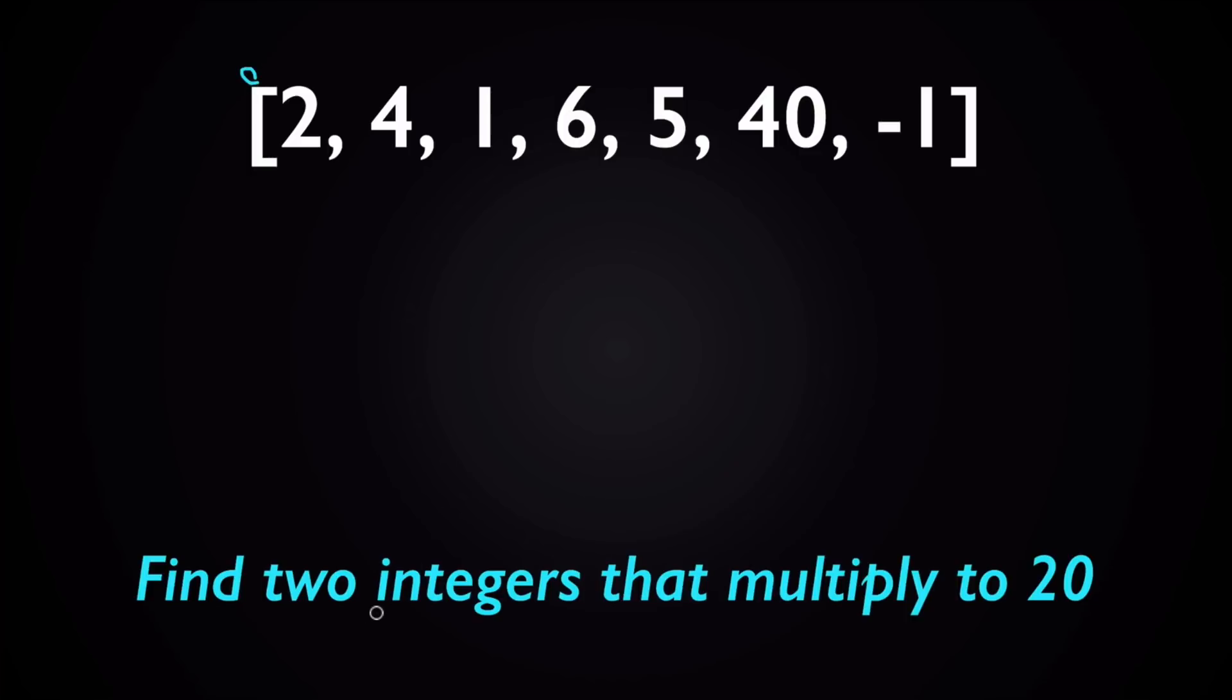So with this example, with this given array, you can see that four and five here multiply to 20 together. So that's the pair you need to find.